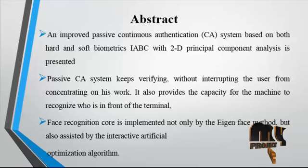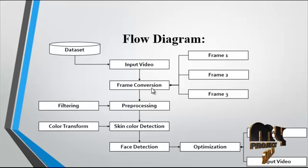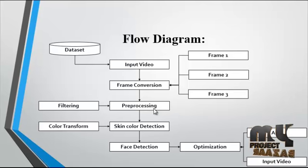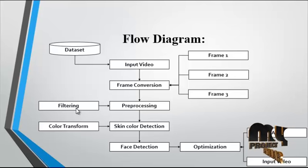Now we discuss the flow diagram for the process. First, the input video is taken from the dataset, which consists of several dataset videos. The input video is then converted into a number of frames — frames are a sequence of images extracted from the single video. After extracting the frames, pre-processing is applied, which involves filtering — specifically, noise filtering.